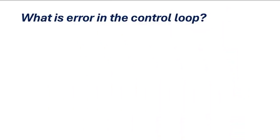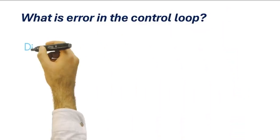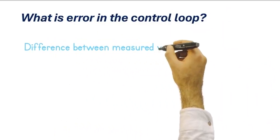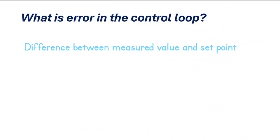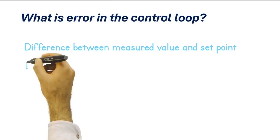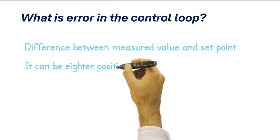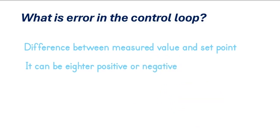What is loop error in a control loop? Loop error is the difference between the measured variable and the set point. Loop error can be either positive or negative.